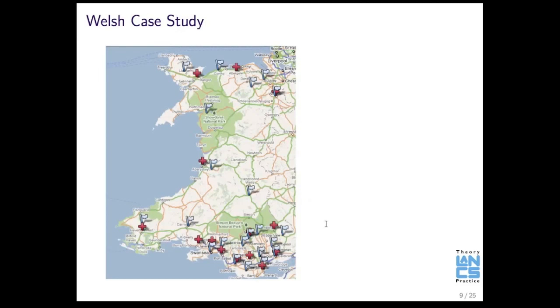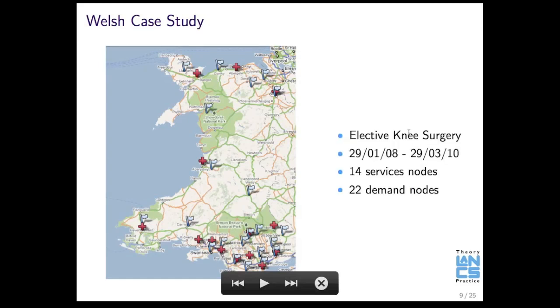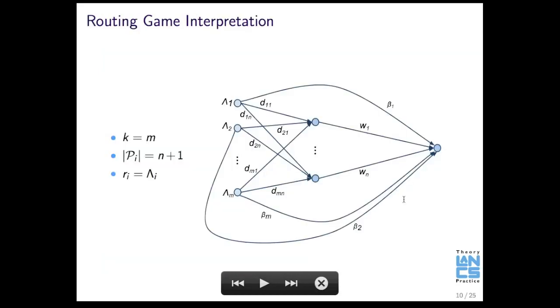So, in my previous work, I looked at Wales, and I identified certain hospitals and certain demand nodes for a particular surgery, for elective knee surgery over a certain time period. We had a certain amount of service nodes, a certain amount of demand nodes. And I gave a general model, a general routing game model, that takes into account the choices that could be made by patients when choosing between healthcare facilities.